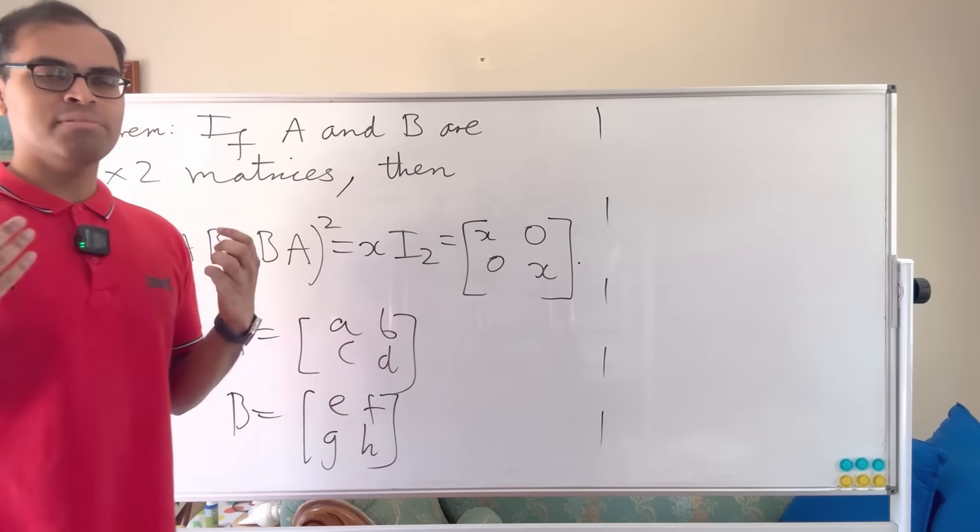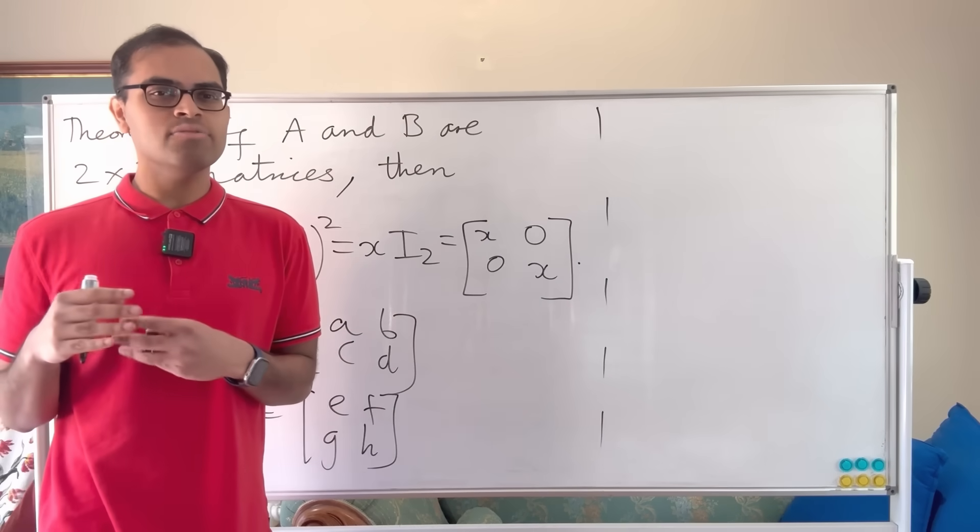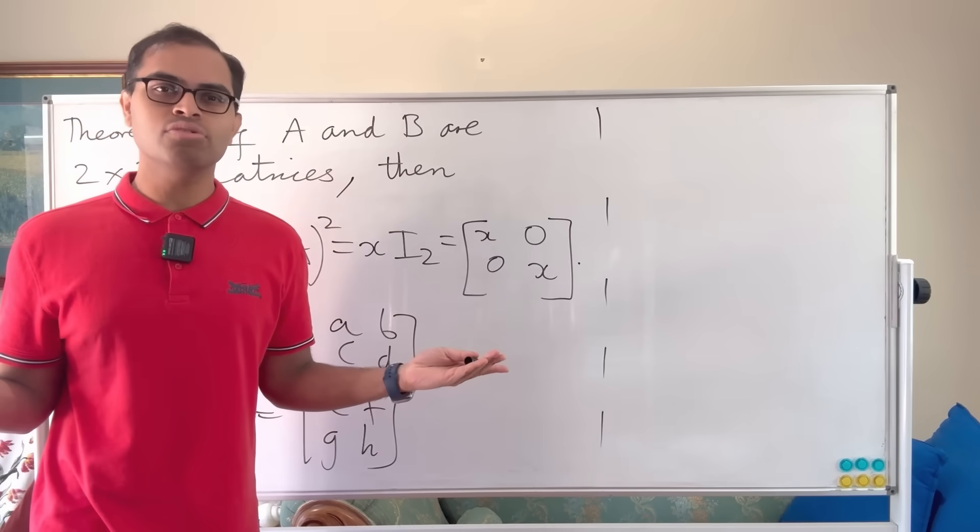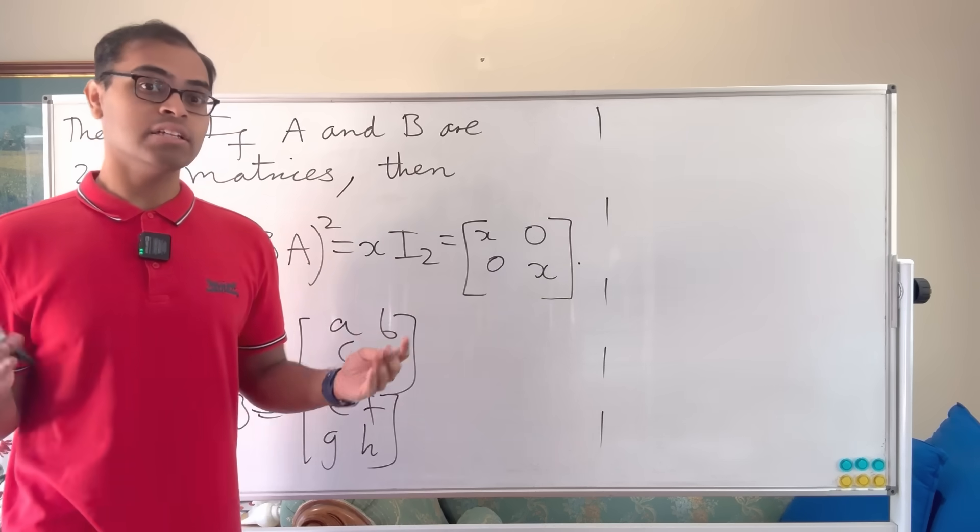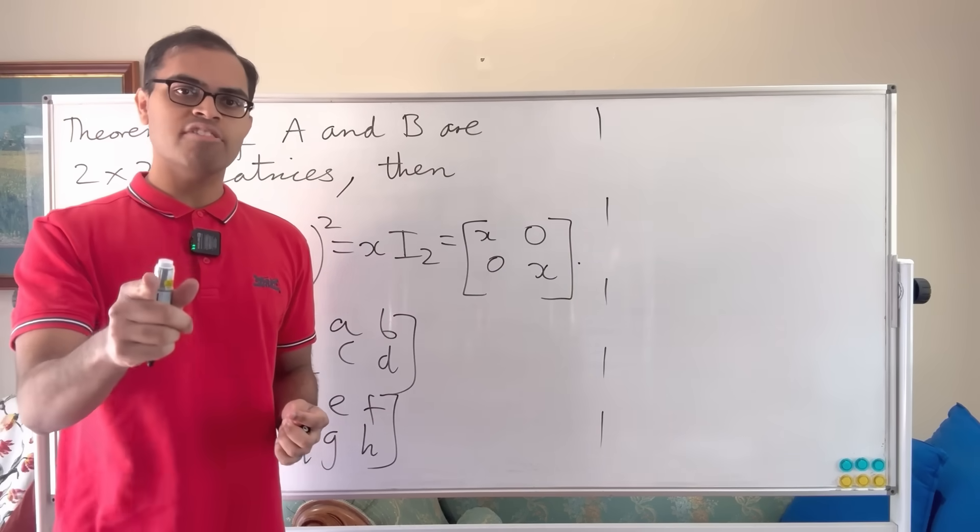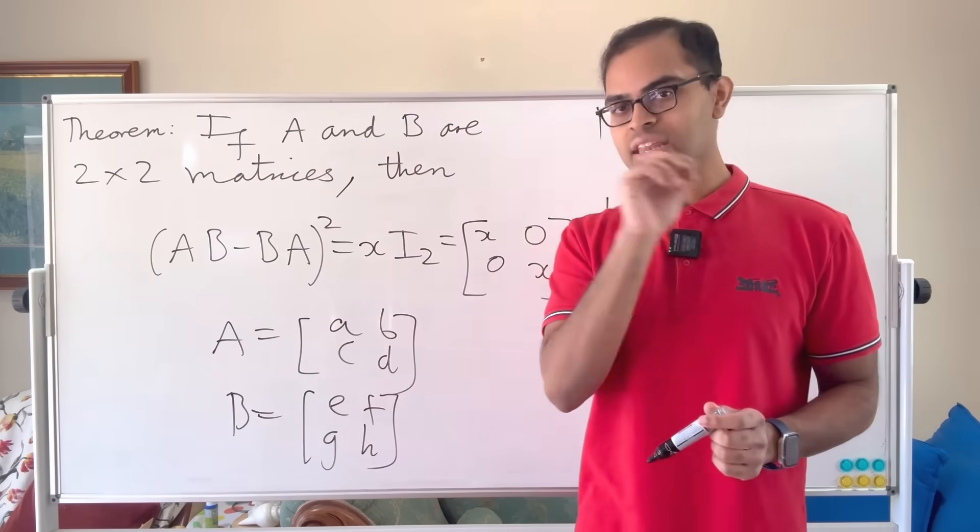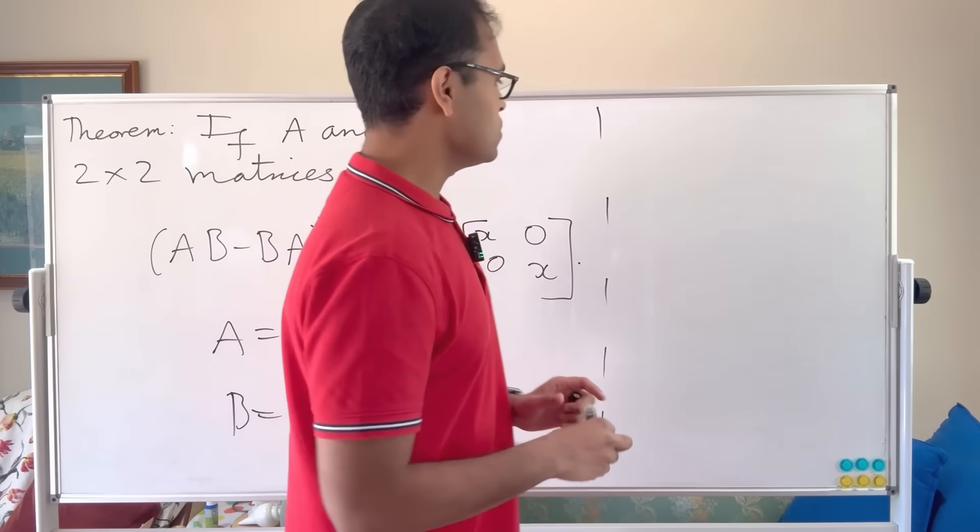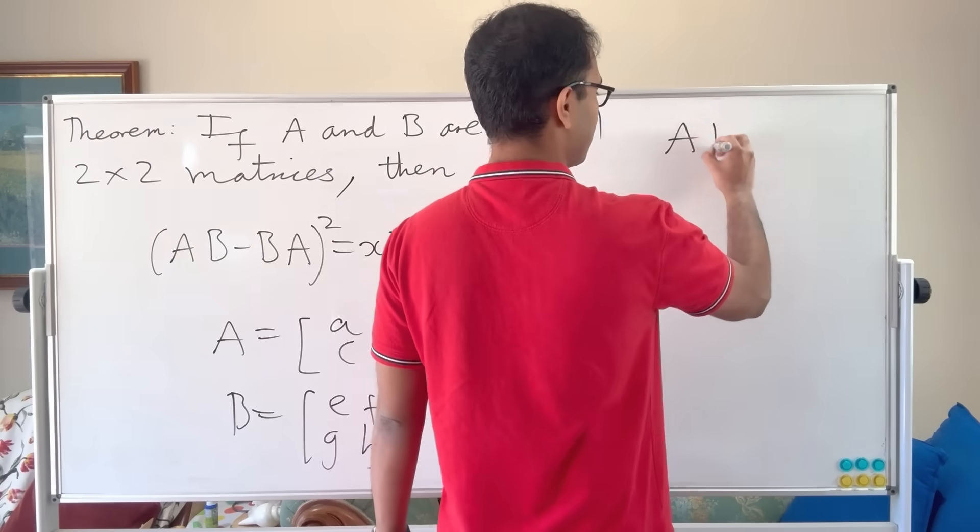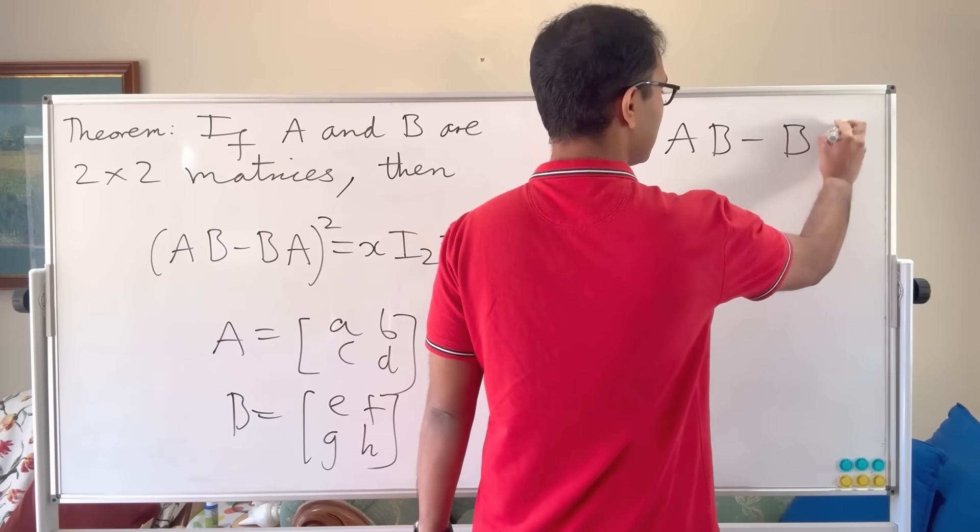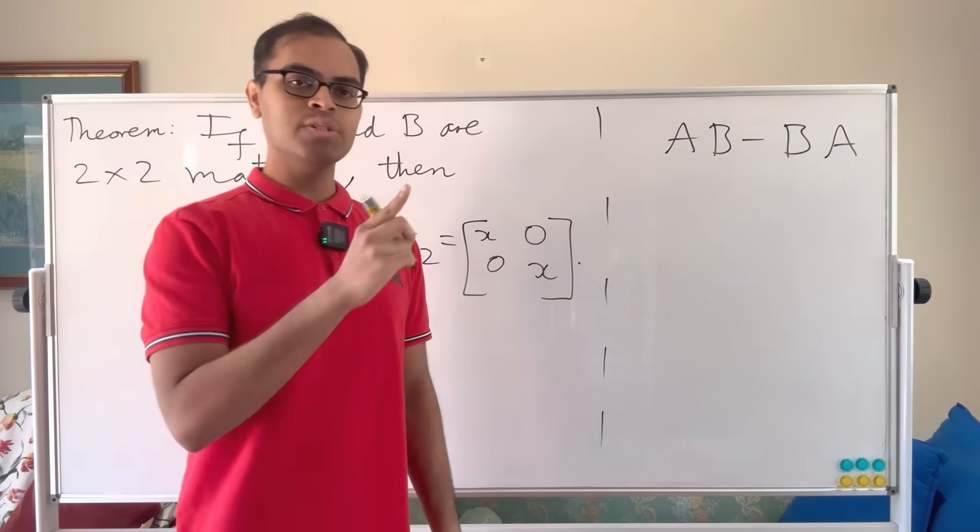But that's such a bad way of proving it and it doesn't really help to understand why this is true or even it's just not elegant. So let's shorten it and that's the beauty of math. It's shortening arguments, finding creative tricks to make things very natural and simple. So what we're going to do is we're going to understand this matrix AB minus BA. It's a very special kind of matrix and what's special about it?